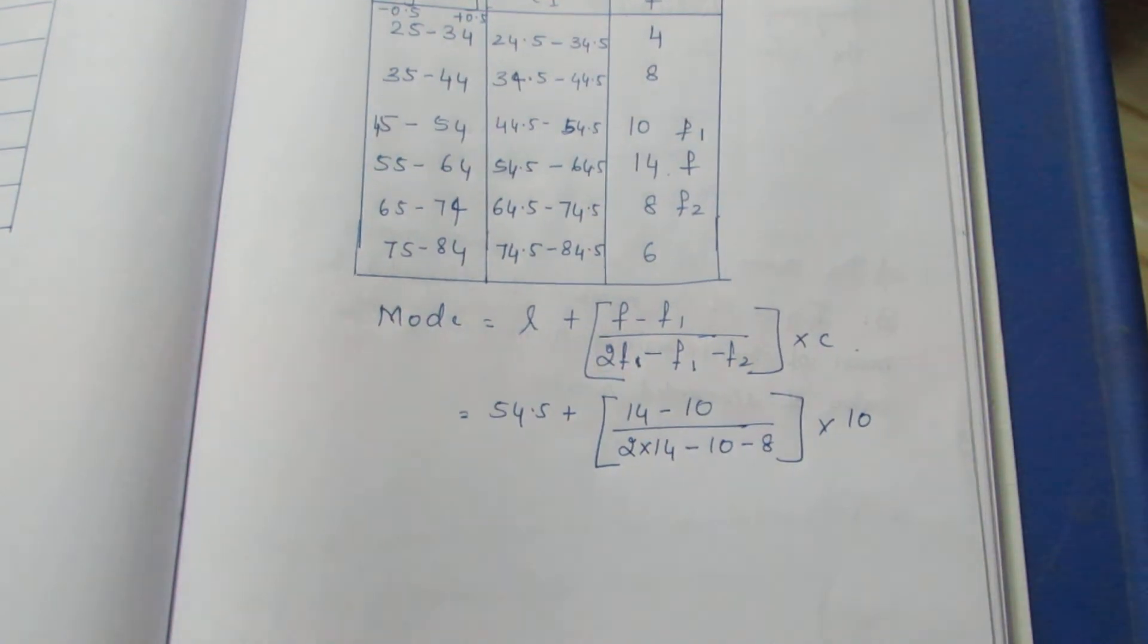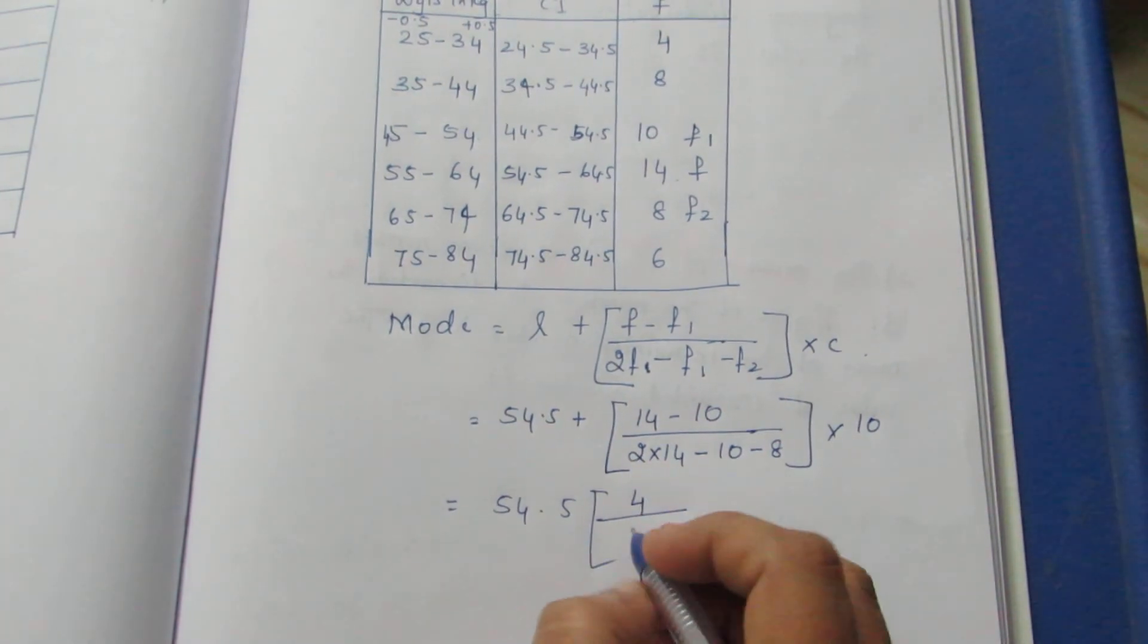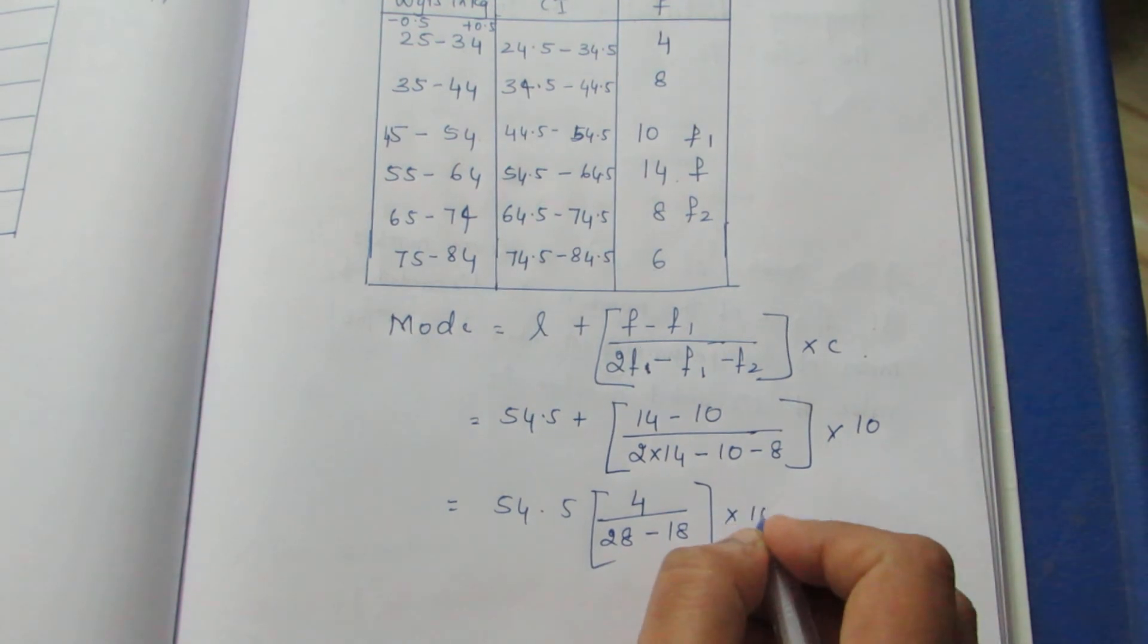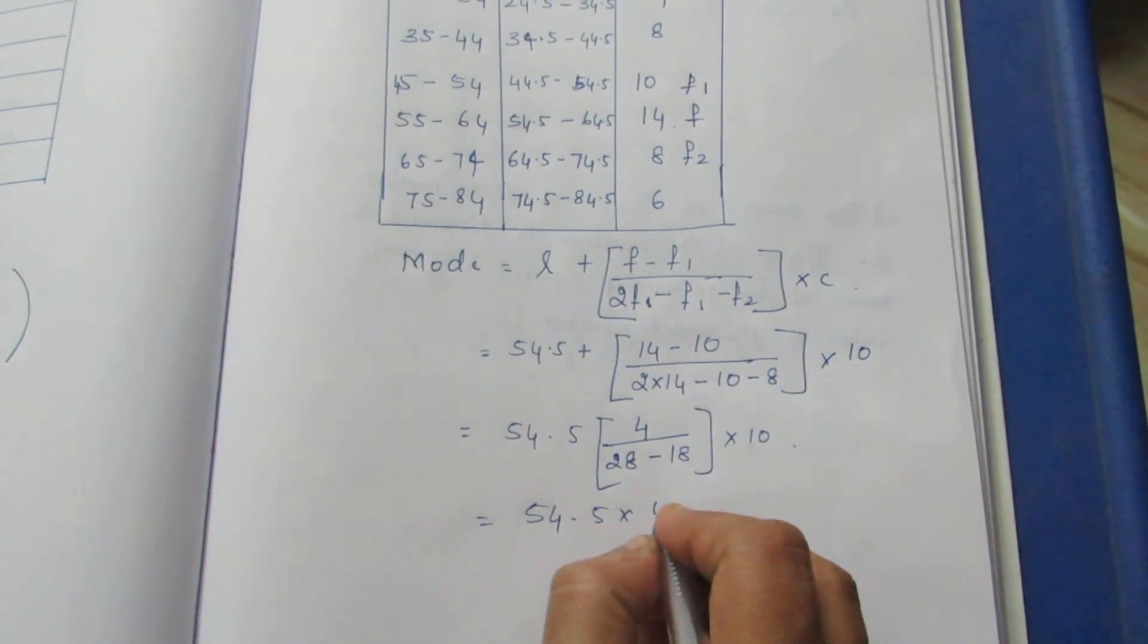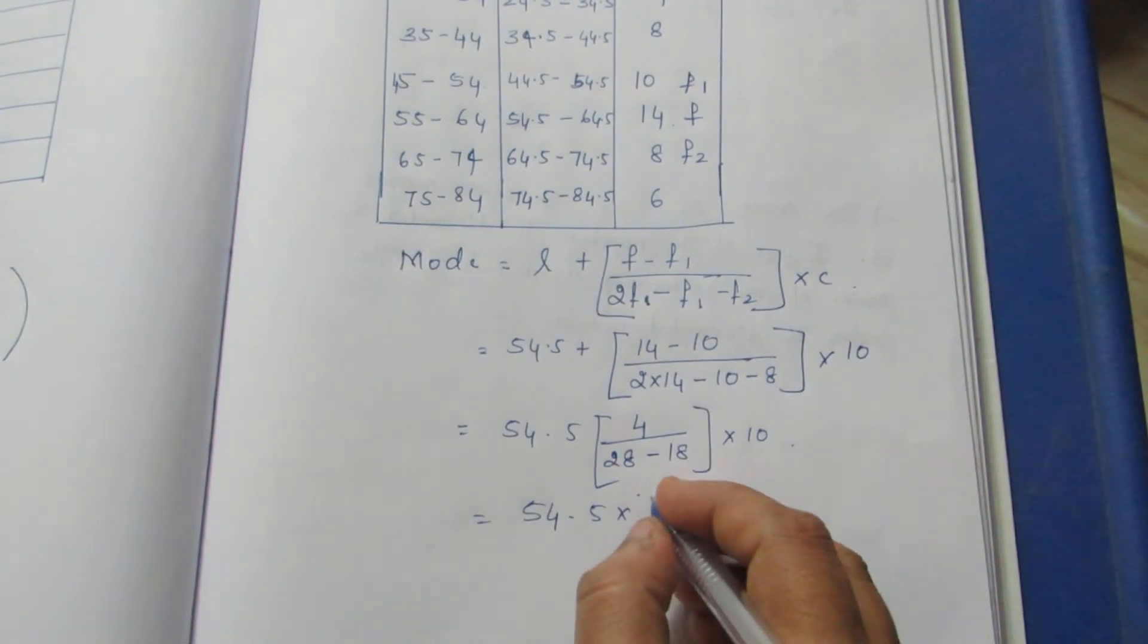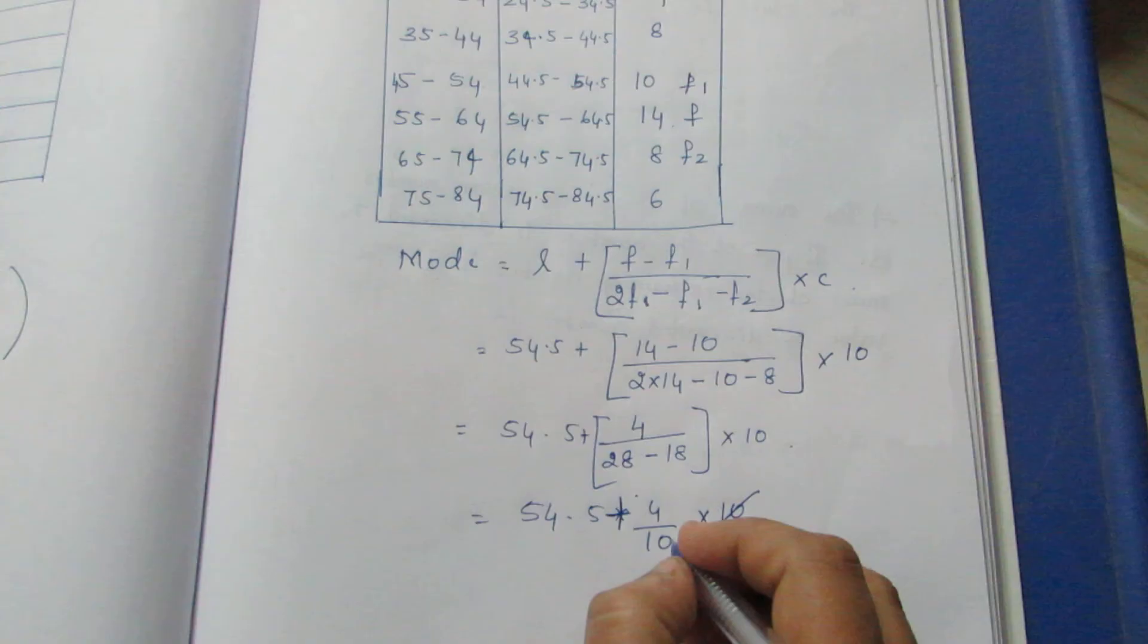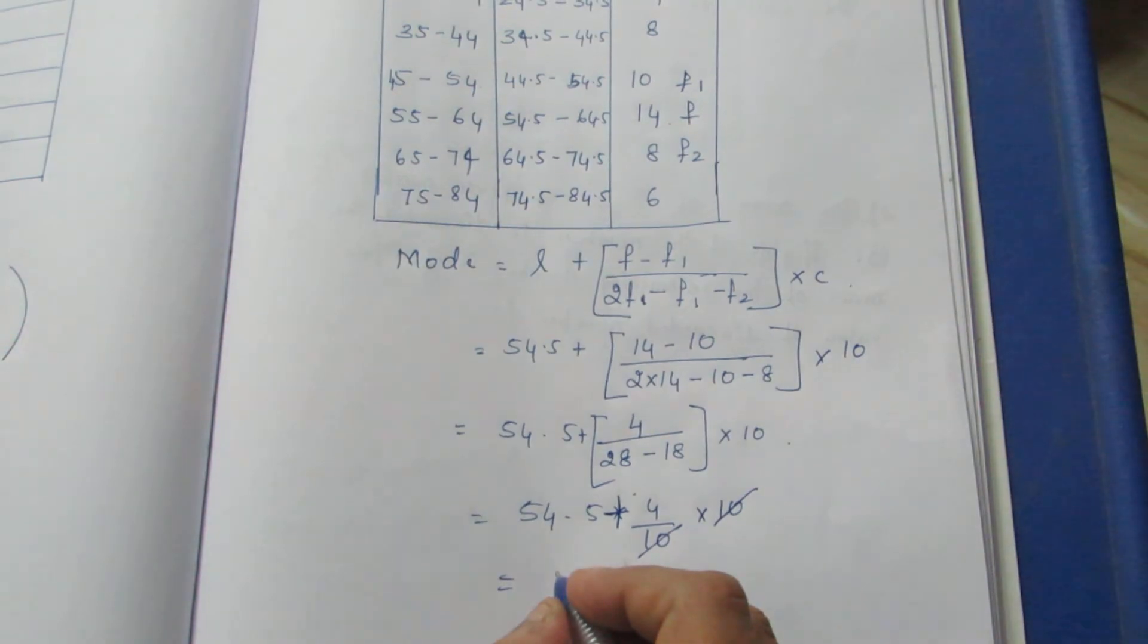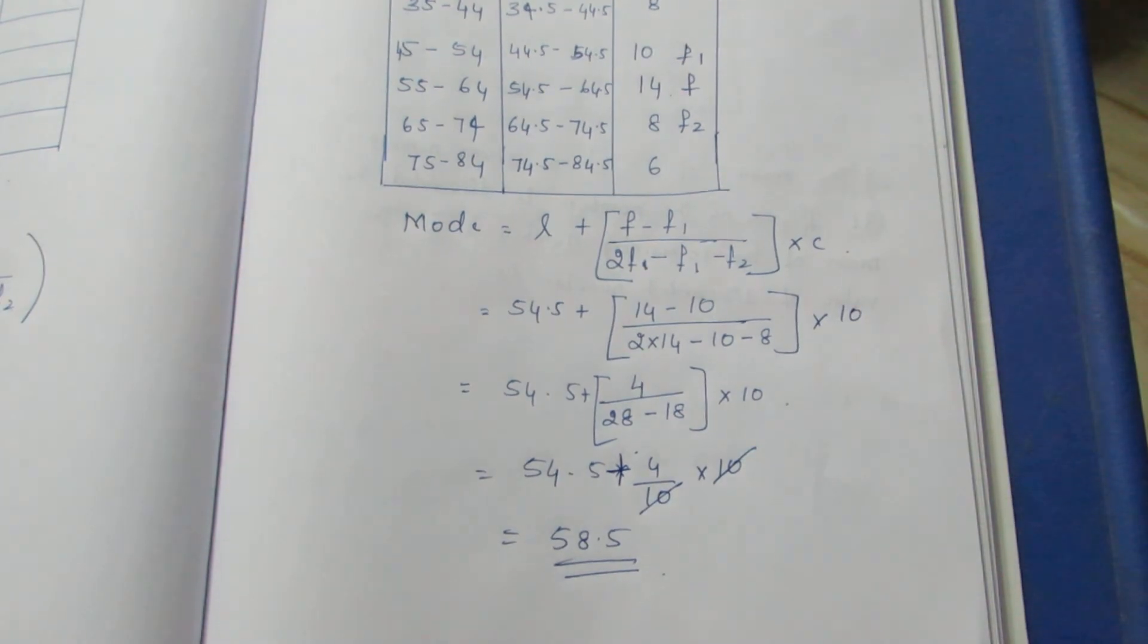So, we will calculate value 54.5. We will solve 4 by 28 minus 18 into 10. We will solve 54.5 into 4 by 10 into 10. 54.5, 58.5. Thank you.